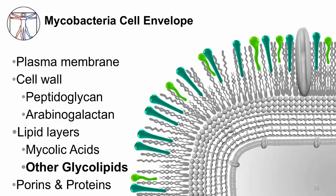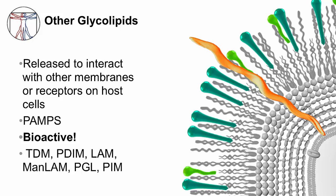In addition to mycolic acids, the cell envelope is also composed of a variety of other glycolipids that are non-covalently bound. These glycolipids can be released from the cell envelope to interact with other membranes or receptors on host cells in a variety of ways. For example, some of these glycolipids are PAMPs, or pathogen-associated molecular patterns, and can be recognized by toll-like receptors, initiating an innate immune response. In short, these glycolipids are bioactive. Mycobacteria can use these glycolipids to regulate the host immune response, and there are many of them, many of which are referred to by abbreviations. I listed some of the more common ones so that you can recognize them as glycolipids.